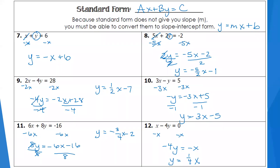For number 10, you should have y equals 3x minus 5. Number 11, y equals negative three-fourths x minus 2. And number 12, y equals one-fourth x. If you'd like help or extra practice with this skill, you're welcome to join me in office hours, or email me for additional practice problems. There are also some good practice problems in OMHS.